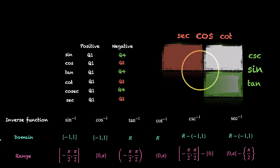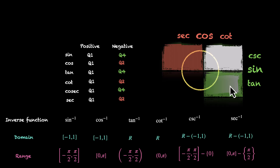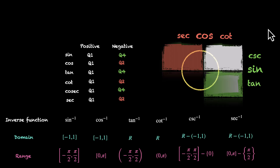So those were the graphs. This is the table for the domain and range for inverse functions. I personally use this visual — the unit circle — when I need to remember which quadrants to pick. Sine is positive in Q1 and Q2, so sine inverse takes those two quadrants. Cosine takes Q1 and Q4. Tangent takes Q1 and Q4 as well. Cotangent takes Q1 and Q2. And cosecant sits where sine is, and secant sits where cosine is.